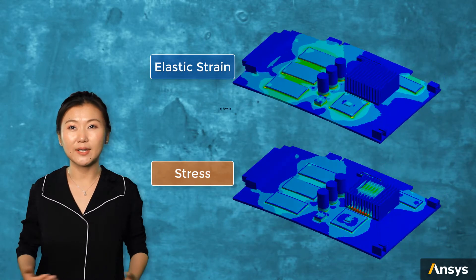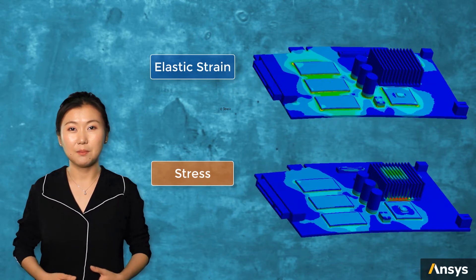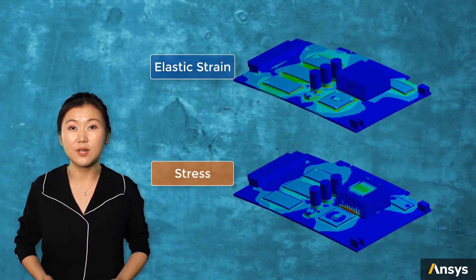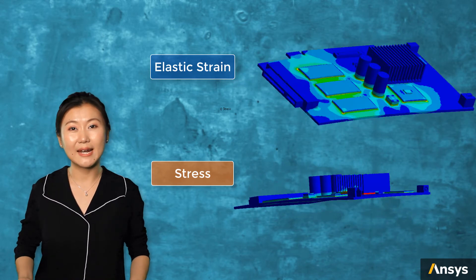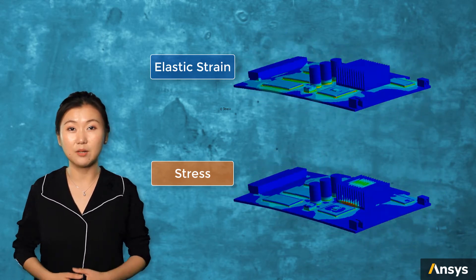For elastic strain and stress, these two terms are directly related to each other by elasticity. Because the thermal expansion is constrained for this problem, we can see elastic strain and stress developing over the entire body.